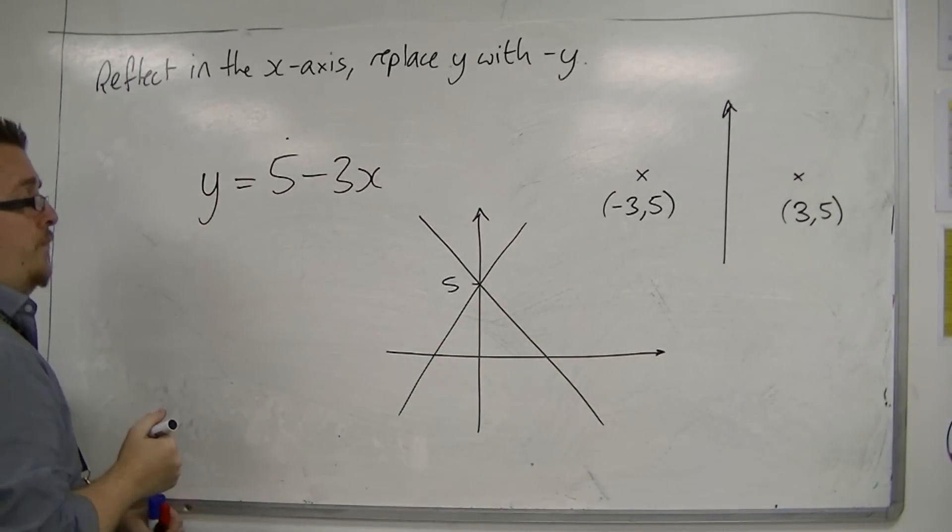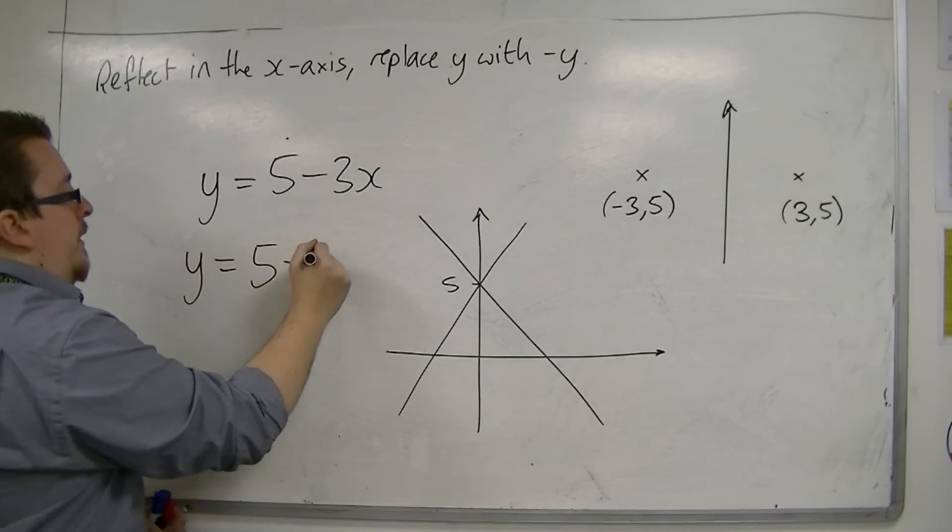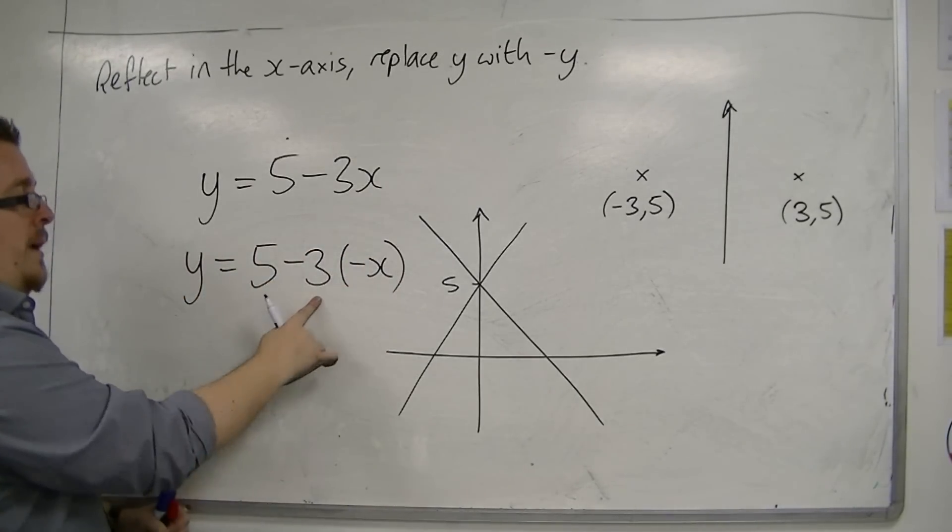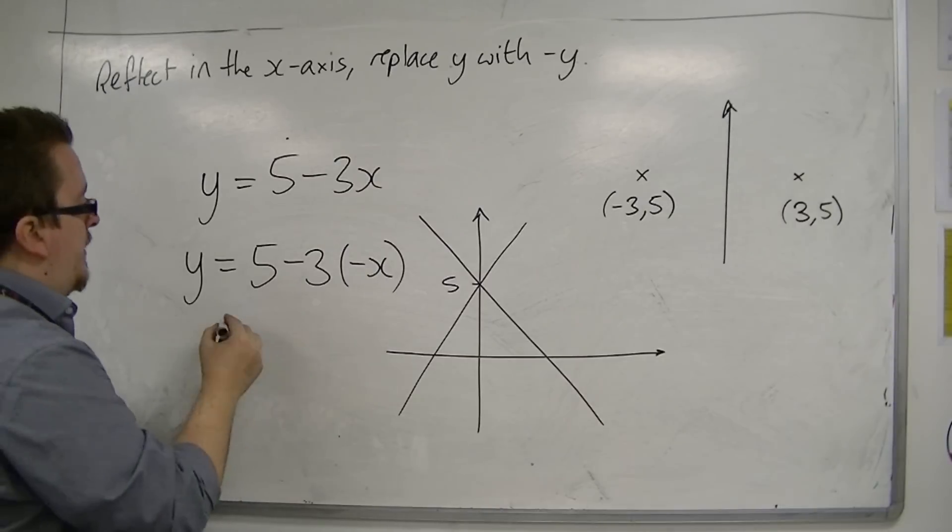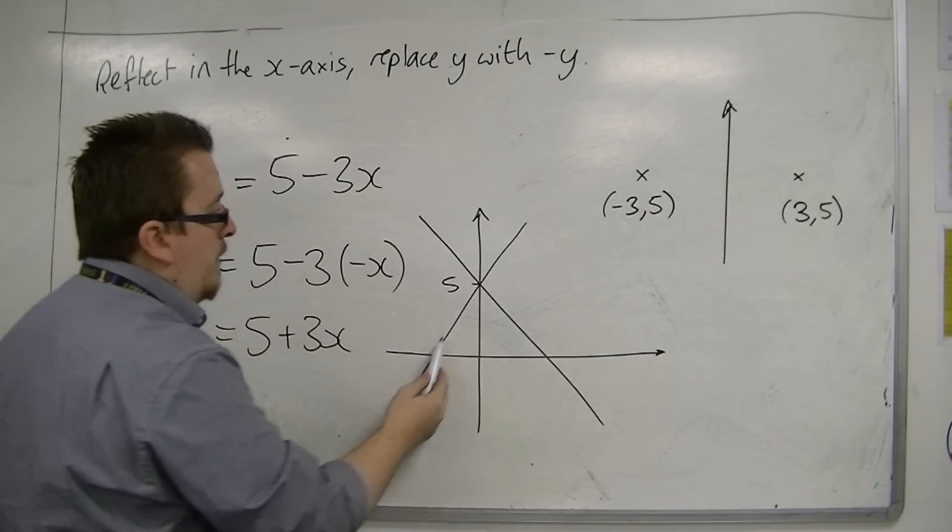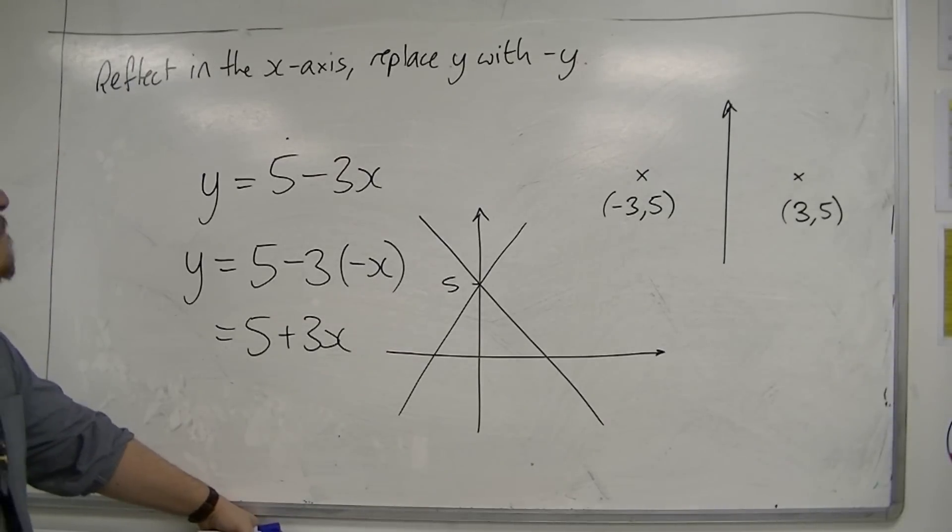For the equation, I now replace the x with -x. And subsequently, you've got -3 times -x, so that's just 5 + 3x. So this line has the equation y = 5 + 3x.